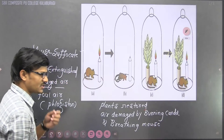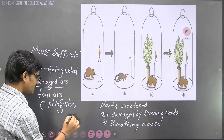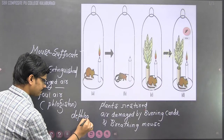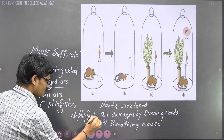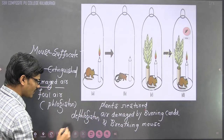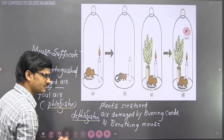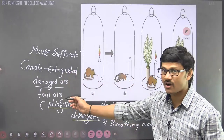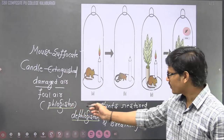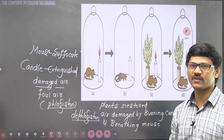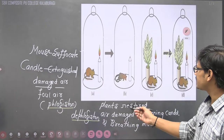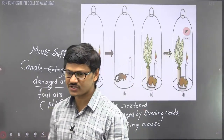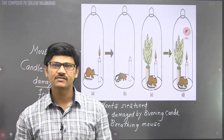Priestley used one more term: deflogiston. Phlogiston is the foul or damaged air, whereas deflogiston is the fresh or pure air restored by the plant. After this experiment, it took four years for Priestley to discover oxygen in 1774.